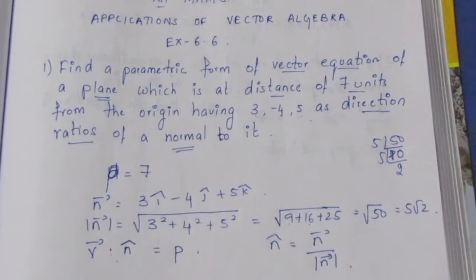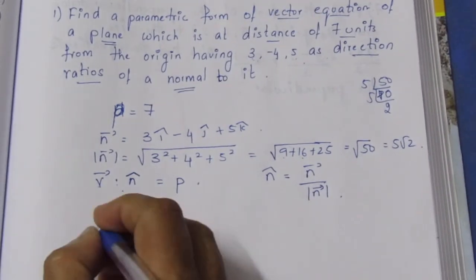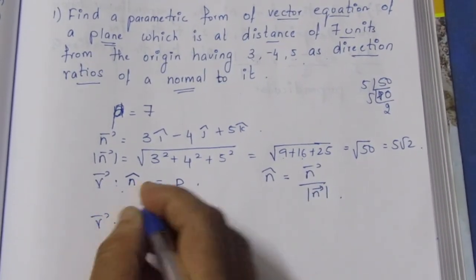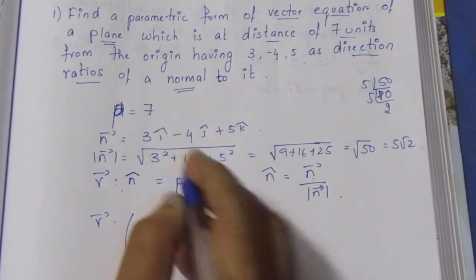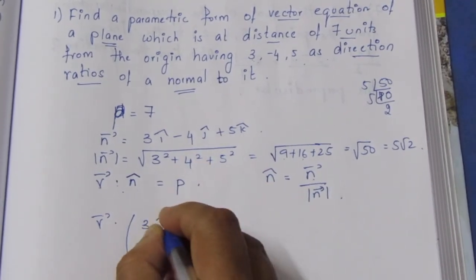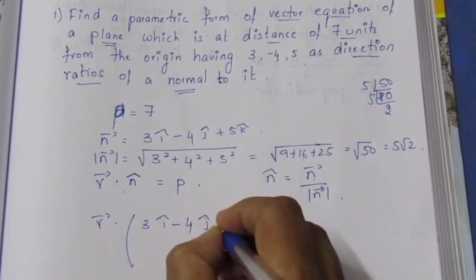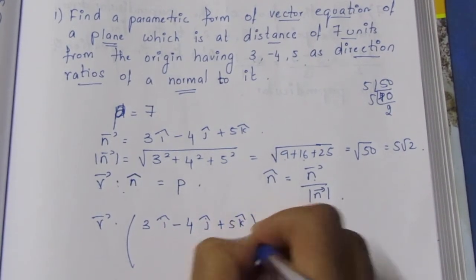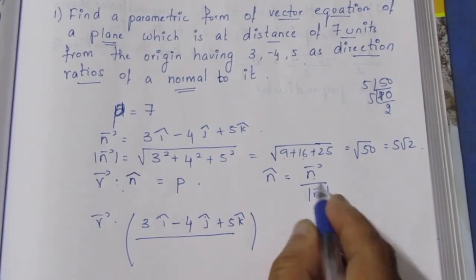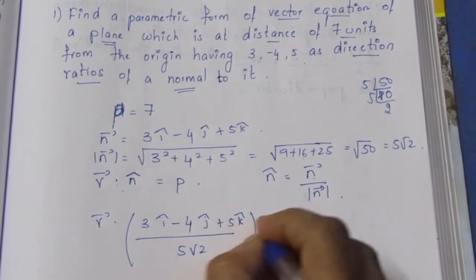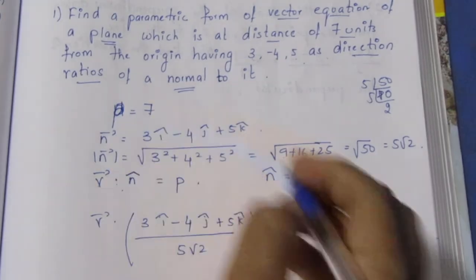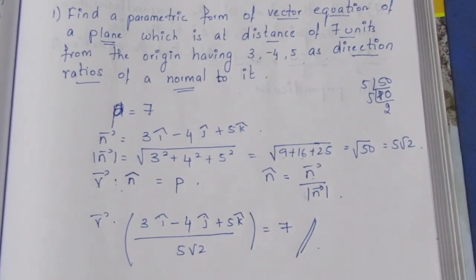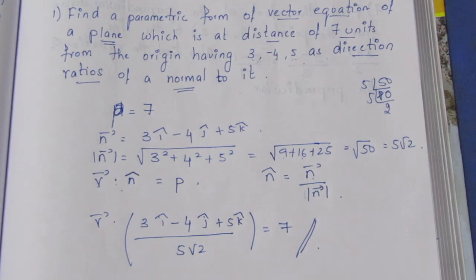Now substituting here, r⃗ · n̂ equals r⃗ dot (3î − 4ĵ + 5k̂) divided by the modulus of n⃗, which is 5√2, equals p, which has the value 7. So this is our answer. It is very easy to solve using the dot product. This is the vector equation and that is the solution.